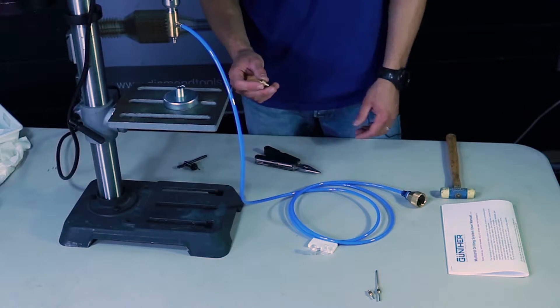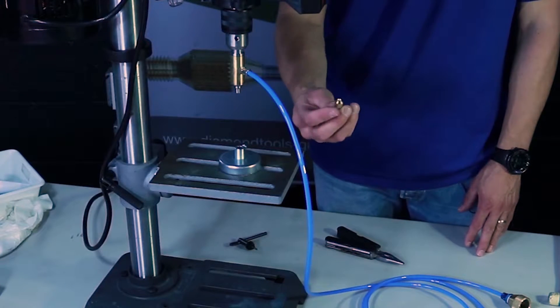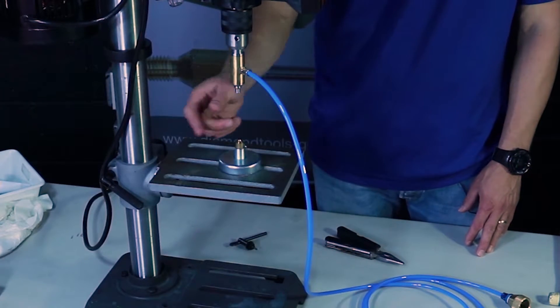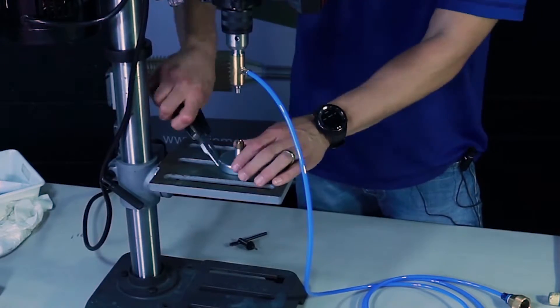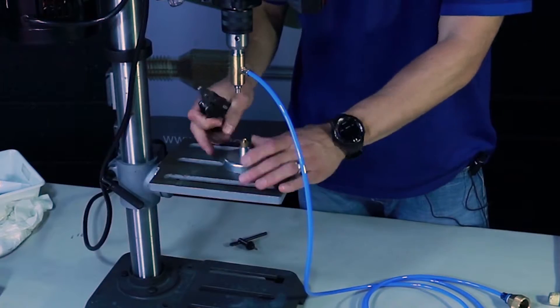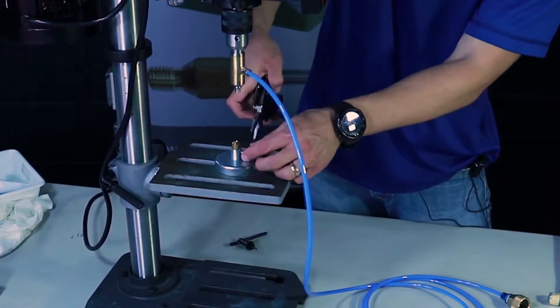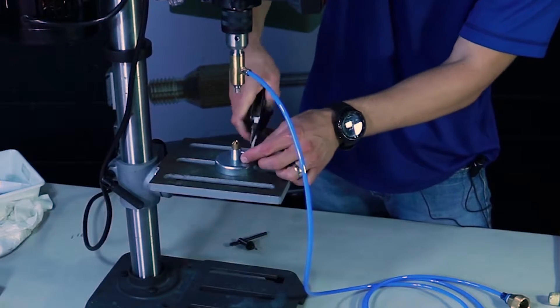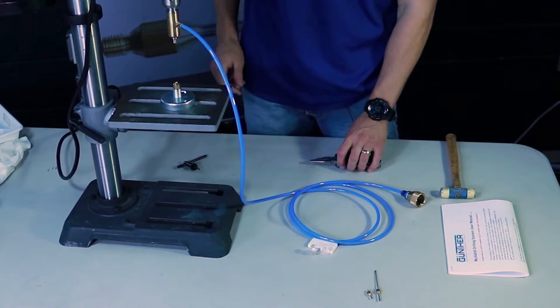And we're going to start with the counterpart insert. So I take the metal insert, put it into the magnetic base and there's a bolt on the side that I'm just going to snug down so that metal insert does not spin.